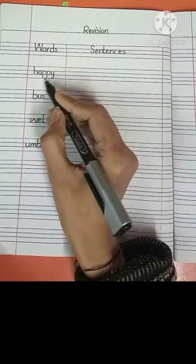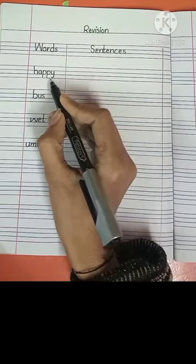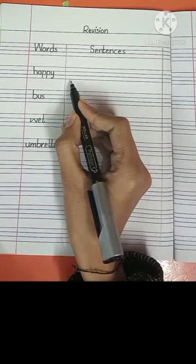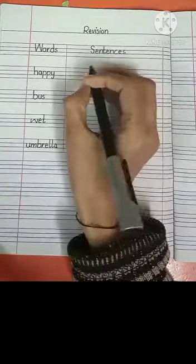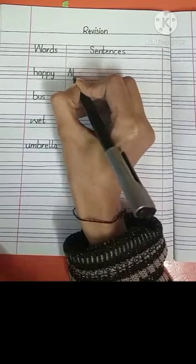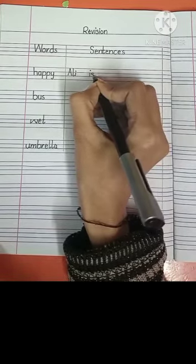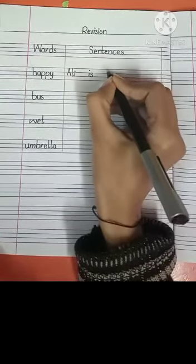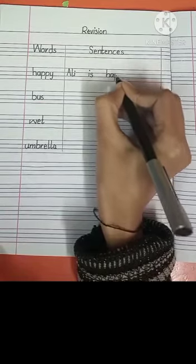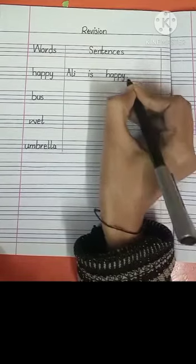Look at the first word. The first word is happy — H-A-P-P-Y, happy. Students, you can write: she is happy, he is happy. I will write here: Ali is happy. Write with me. A-L-I, Ali is happy. H-A-P-P-Y, happy. Put a full stop here.